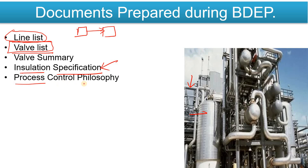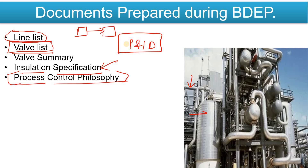The Process Control Philosophy is also prepared with reference to the P&ID. That's why I say the P&ID is the heart of the process — most of these documents are prepared with its help. In the Process Control Philosophy, whatever interlocks, set points, and alarms you have defined, everything is included — essentially how your process is to be controlled.